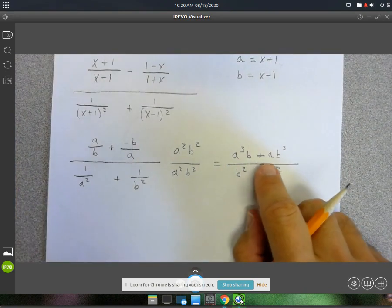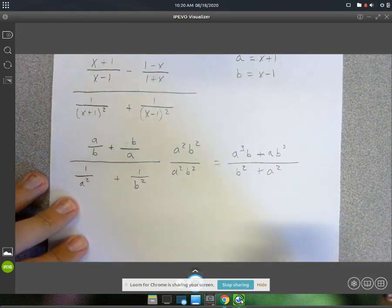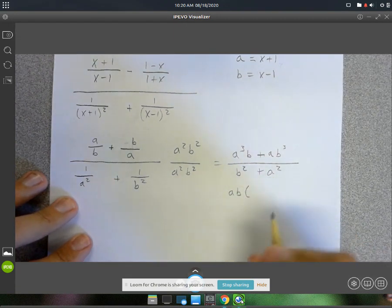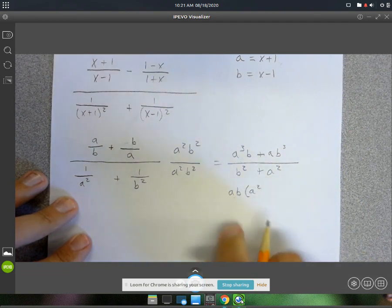Now, in the numerator here, both terms have an a, and both terms have a b. So I'm going to factor out an a b. That's going to make this one an a squared. No b.